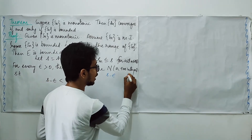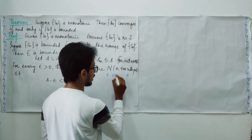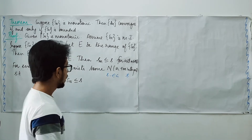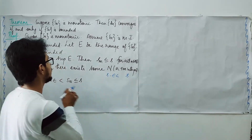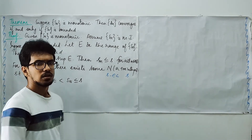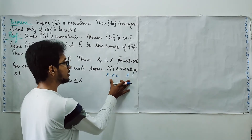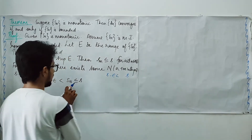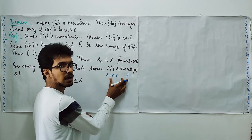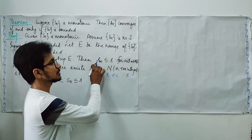So we have assumed S_n is a monotonically increasing and bounded sequence, and proved it is convergent. Conversely, if we assume S_n is convergent, then by the property of convergent sequences — all convergent sequences are bounded — S_n is also bounded. This completes the proof for the monotonically increasing case. Now we will see what happens for monotonically decreasing sequences, and also explain why we chose supremum instead of infimum.